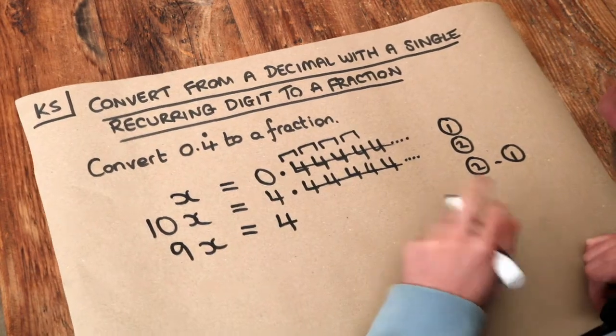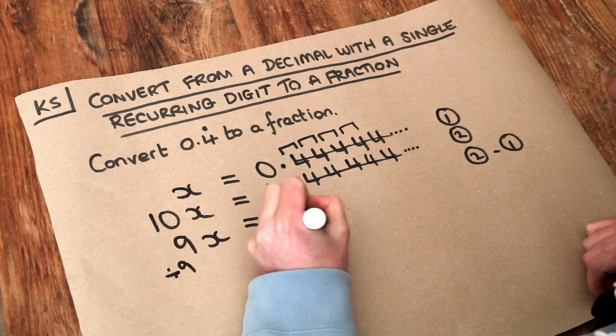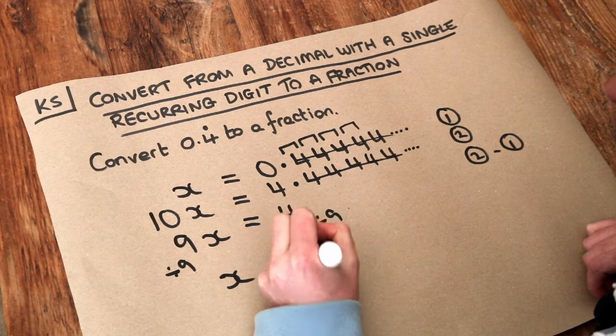So we've got 9x is 4. And then to get x on its own, divide both sides of the equation by 9. And we get x is 4 over 9.